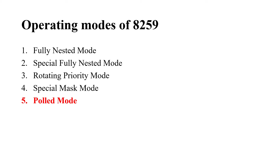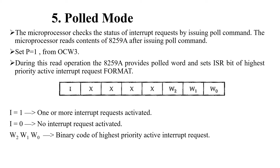8259 works in total 5 operating modes. With polled mode, the microprocessor checks the status of interrupt requests by issuing a poll command. The INT outgoing line of 8259 is not used in polled mode. The microprocessor reads the contents of 8259 after issuing the poll command. Polled mode can be entered by setting P equal to 1 from OCW3, that is Operation Command Word 3. During this read operation, the 8259 provides the polled word and sets the ISR bit of the highest priority active interrupt request.